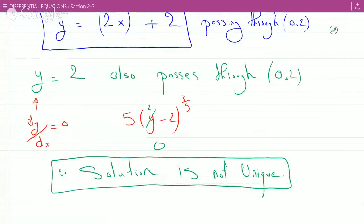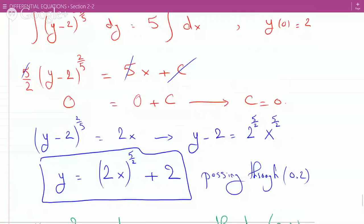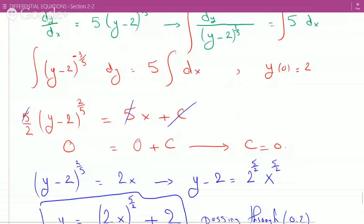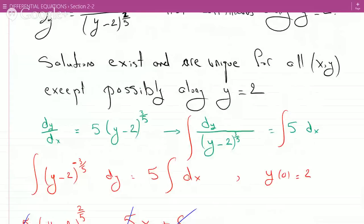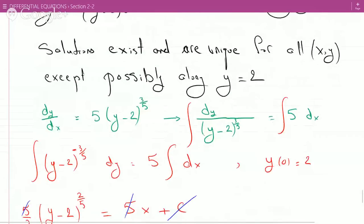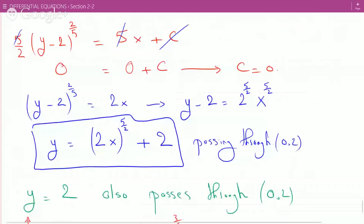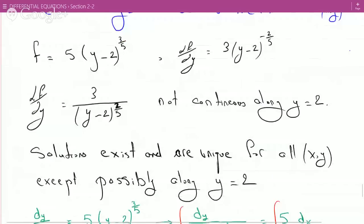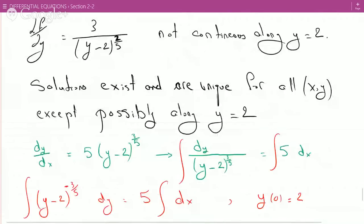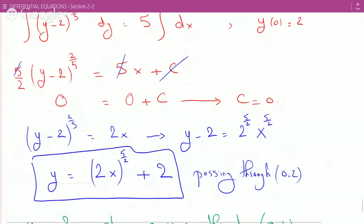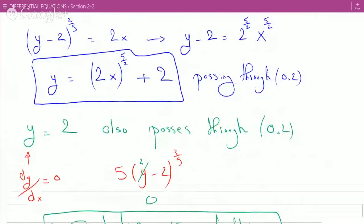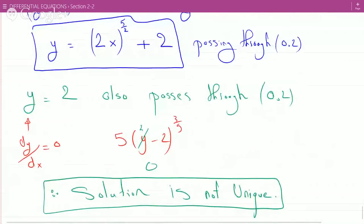And as promised by the existence and uniqueness theorem, it said everywhere except possibly along y equals 2, y equals 2.